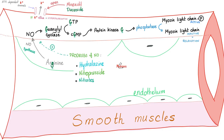Minoxidil and diazoxide are potassium channel openers. When potassium leaves, the cell becomes hyperpolarized, i.e. inactive, i.e. relaxed. Nitric oxide, arginine, guanylate cyclase — GTP becomes cyclic GMP — activates protein kinase G, phosphatase becomes active, removes the phosphate from the myosin light chain. Now the myosin light chain is without phosphate, which means inactive, which means relaxation of smooth muscles such as your blood vessels.